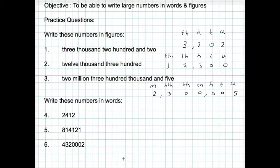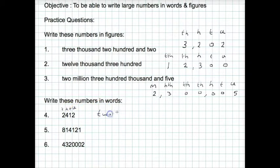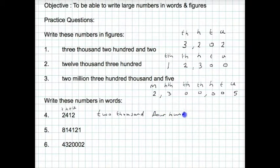Okay, writing this the other way around — this time we write our column headings on the top: units, tens, hundreds and thousands. Now we can see that we've got two thousand, four hundred, one ten and two units. So we write down our answer: two thousand, four hundred and twelve.